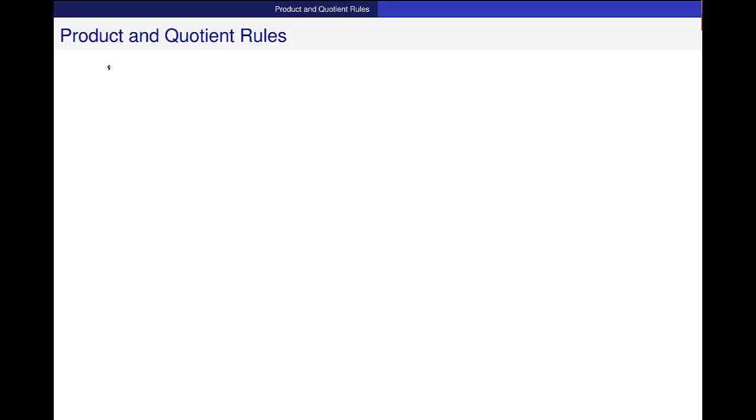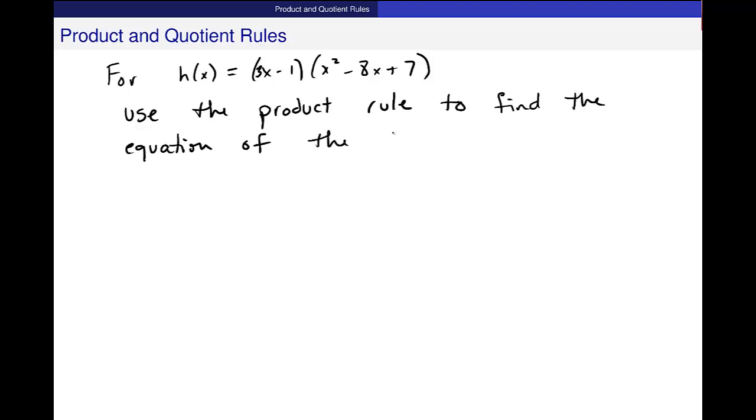So what I want to do is for this function h of x equals, I need an equal sign, for h of x equals 3x minus 1 times x squared minus 8x plus 7. And then, use the product rule to find the equation of the tangent line at x is equal to 2.